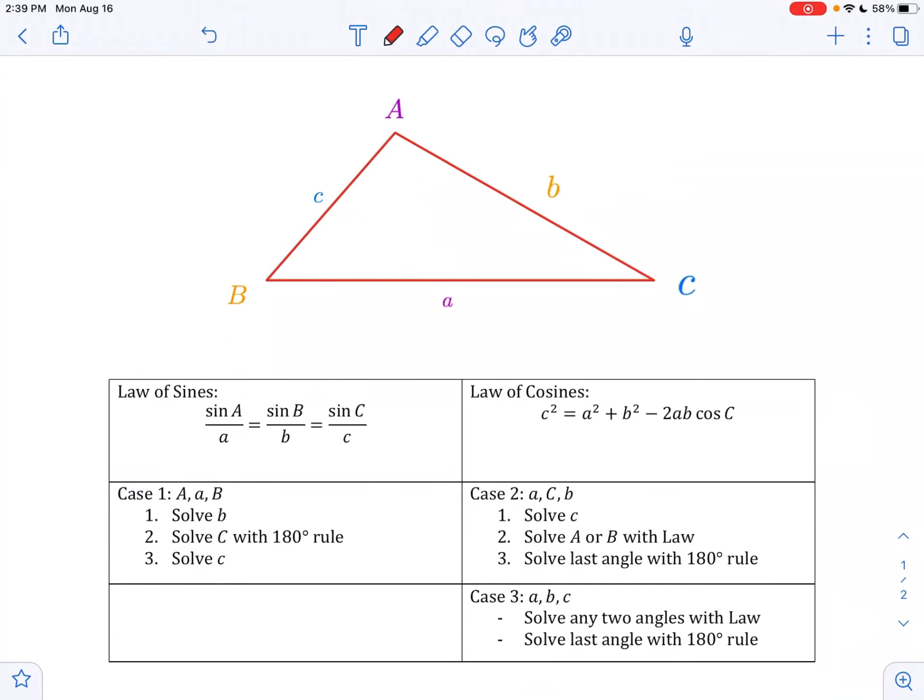Imagine you're given a triangle that's labeled like this and you want to find all three side lengths and all three angle measures. Depending on what three pieces of information I give you about the triangle, you will have to solve it in different ways.